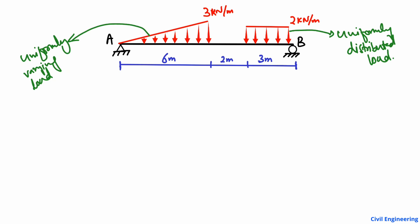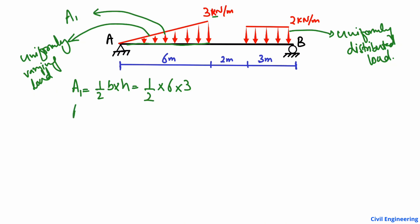First we will find the area of the triangular load — I call it A1. A1 is equal to half base times height. The base is 6 meters and the height is 3 kilonewtons per meter, which is the maximum load. So A1 = ½ × 6 × 3 = 9 kilonewtons. This means the magnitude of the equivalent point load is 9 kN.